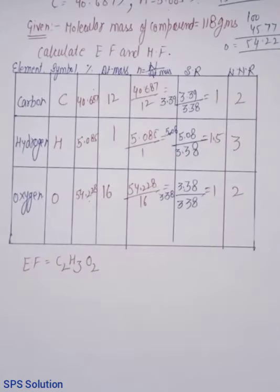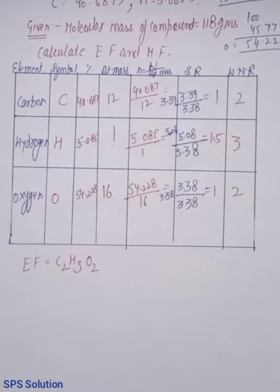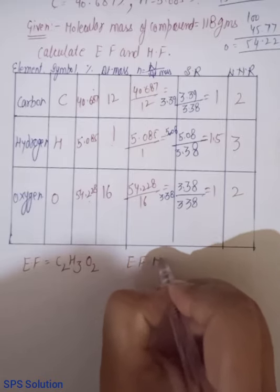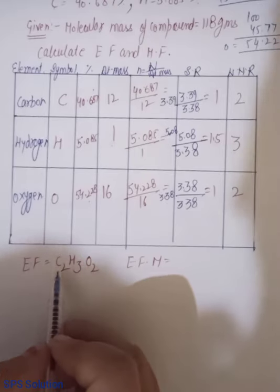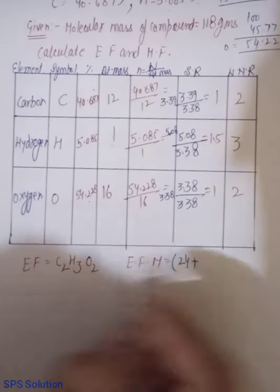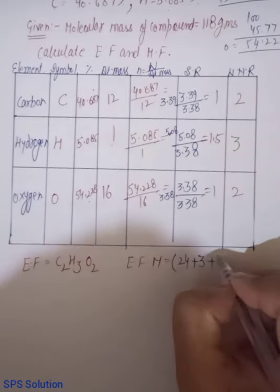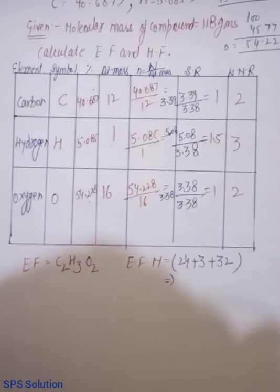Okay? Ab dekho, mujhe N ki value chahiye, molecular formula par jane ke liye. To pehle main kya karungi? Mujhe molecular formula mass diya hua hai. Main empirical formula mass yahan se calculate kar lungi. To empirical formula mass yahan se calculate hoga. Empirical formula mass is equal to, kaise calculate hoga beta? Inke atomic masses se. So, atomic mass is 12 into 2, 24 carbon ka, 3 for hydrogen, plus 16 to the 32 for oxygen. So, its atomic mass is coming out to be 59, okay?